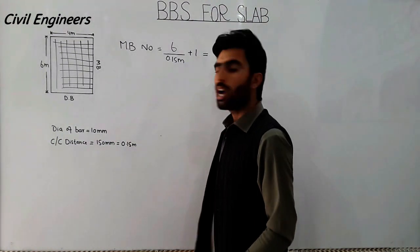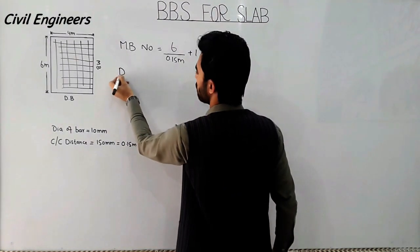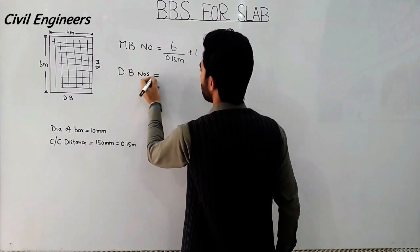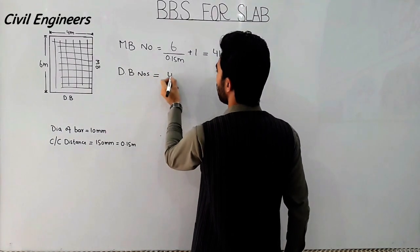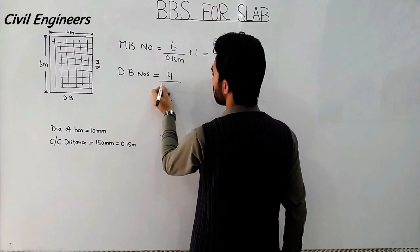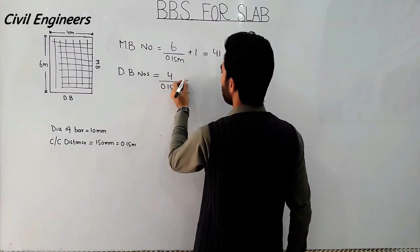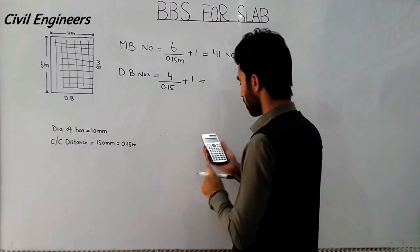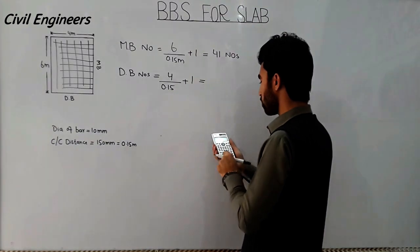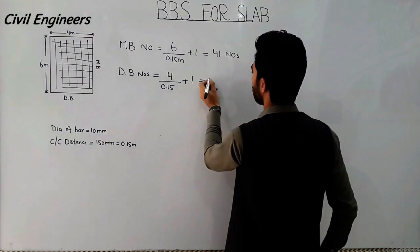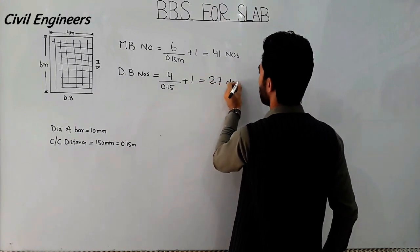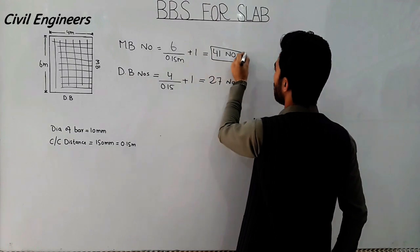Now I will find out the distribution bar numbers. The breadth is 4 meters and center-to-center distance is 0.15 meters. So, 4 divided by 0.15 plus 1 equals 27 numbers of distribution bars.